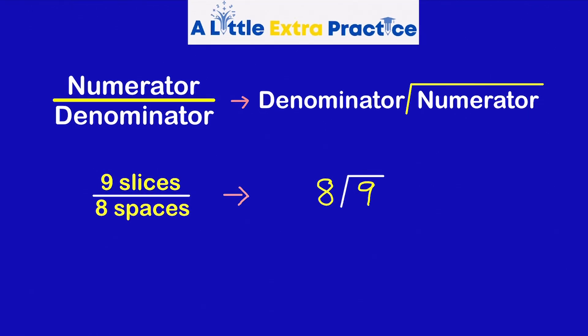Eight can go into nine one time. One times eight is eight. Subtract. We get one. One remainder, one.